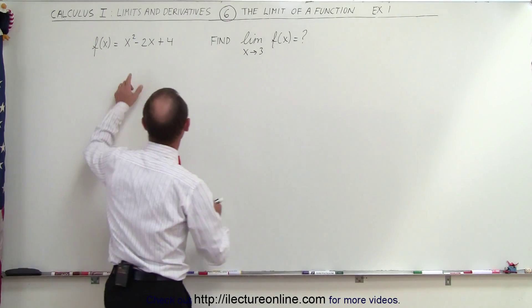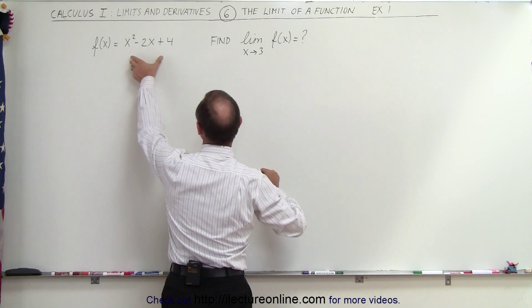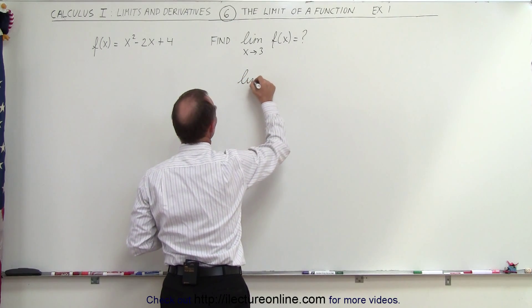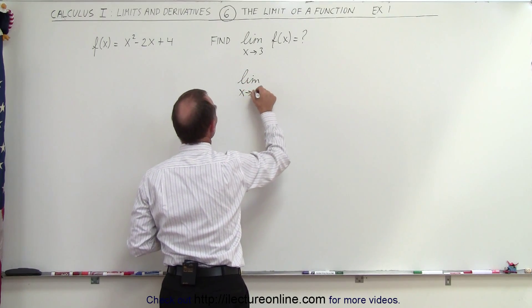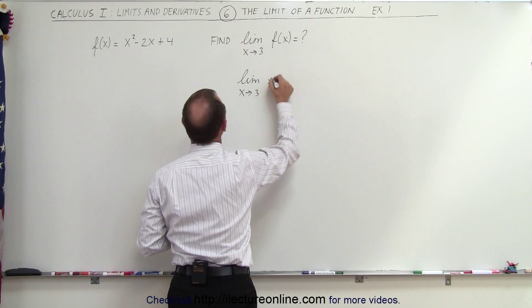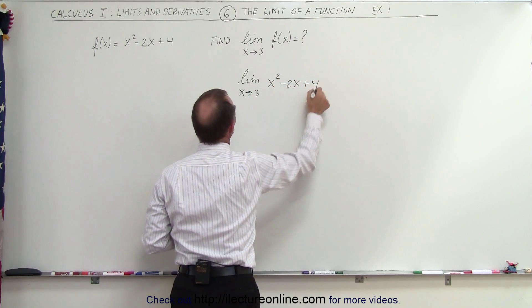Well, let's go ahead and rewrite that, but instead of writing f(x), we're going to write the function itself. So we're trying to find the limit as x approaches 3 of x² - 2x + 4.